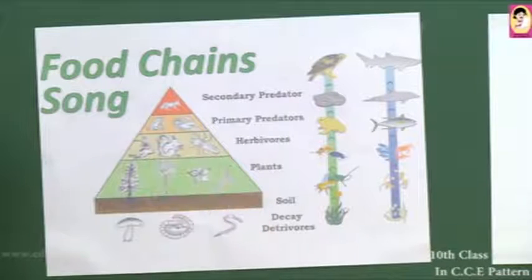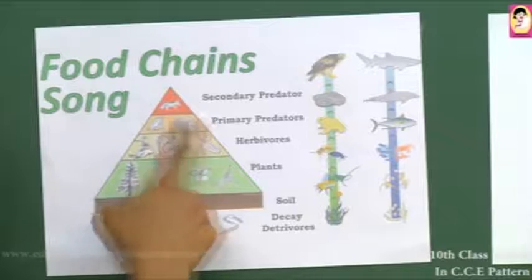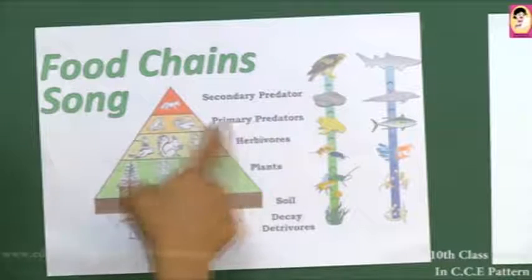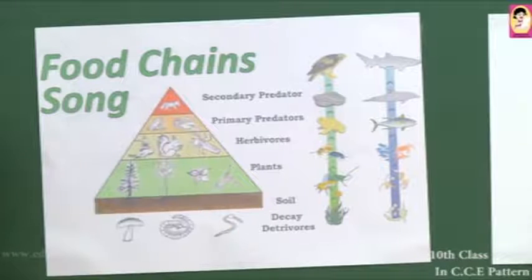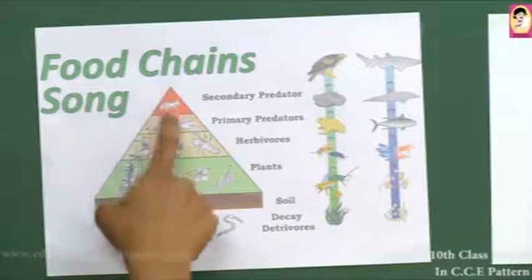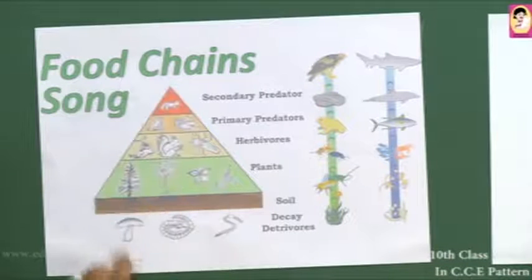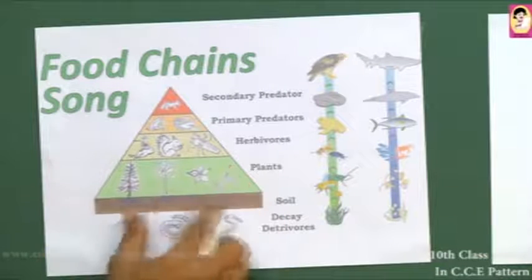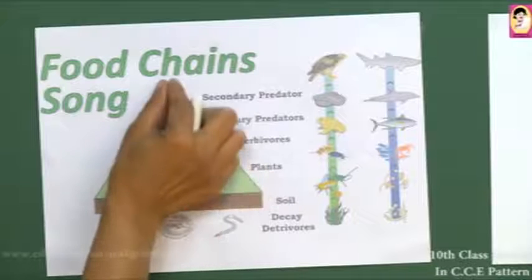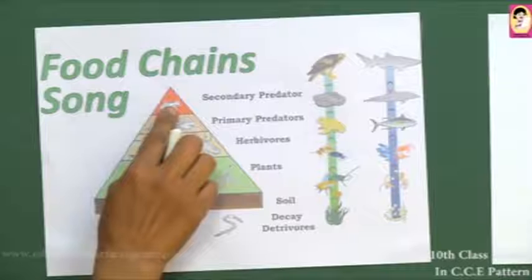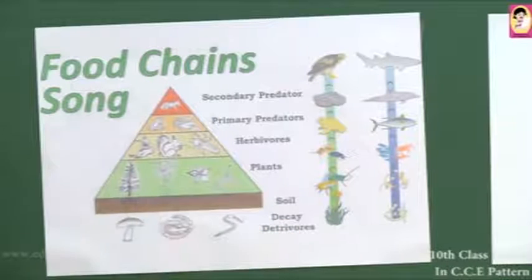Herbivores are considered primary consumers. The next level is secondary consumers, also called primary predators, which depend on herbivores for food. Above them are tertiary consumers, or secondary predators, the most powerful level. In this pyramid structure, producers are greatest in number, followed by fewer herbivores, even fewer secondary consumers, and the narrowest top level is the tertiary consumer.